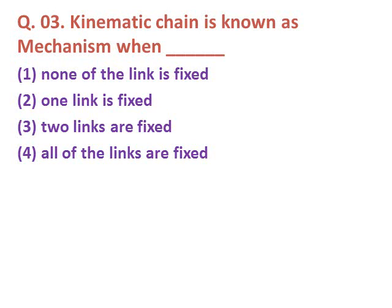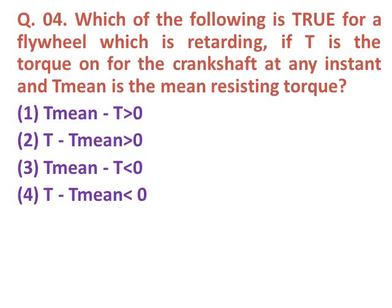Question three: A kinematic chain is known as a mechanism when — option one: none of the links is fixed; option two: one of the links is fixed; option three: two of the links are fixed; option four: all links are fixed. Option two is correct — when one of the links is fixed, the kinematic chain is known as a mechanism.